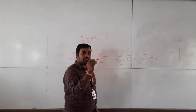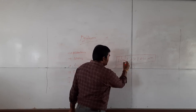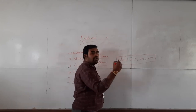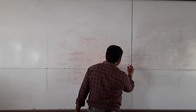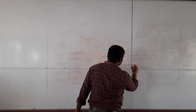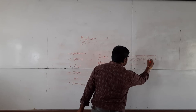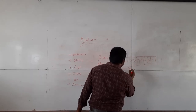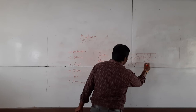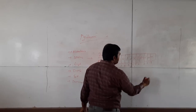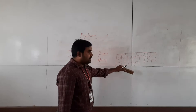Index starts from zero position, up to n minus one. So the positions are 0, 1, 2, 3, 4, 5, 6, 7, 8, 9, 10. This is the indexing concept.